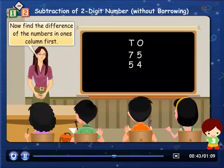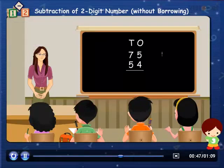Now find the difference of the numbers in ones column first. 5 minus 4 is equal to 1.